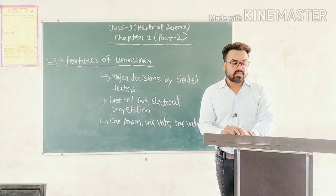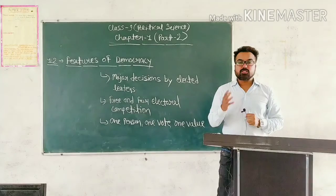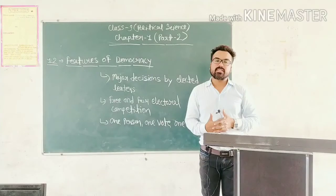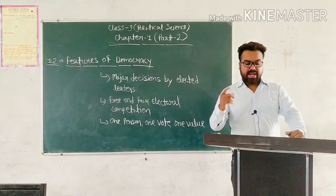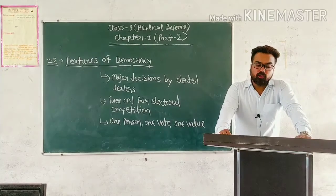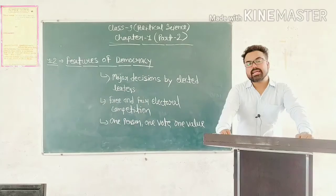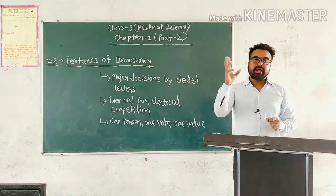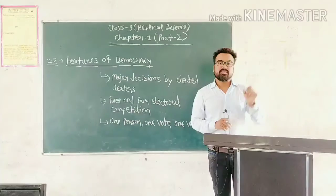Estonia has made its citizenship rules in such a way that people belonging to Russian minorities find it difficult to get the right to vote — ان کو voting rights لینے میں بہت پریشانی کا سامنا کرنا پڑتا تھا۔ In Fiji, the electoral system is such that the vote of an indigenous Fijian has more value than that of an Indian Fijian — Indian Fijian شہریوں کے vote کی value کم تھی۔